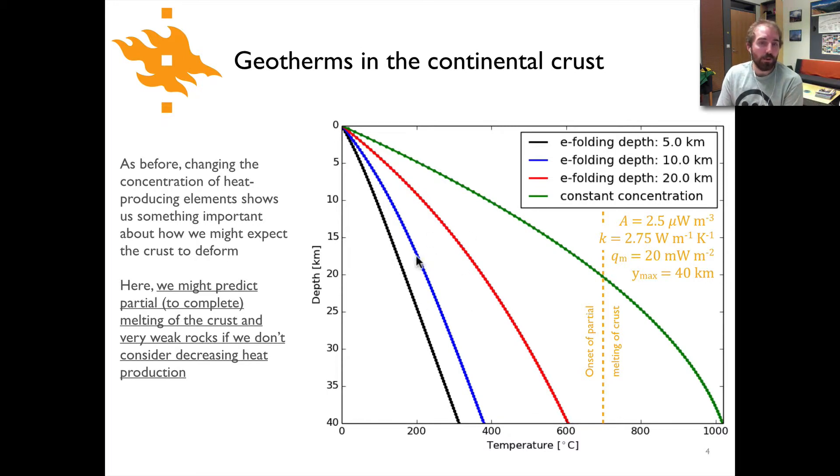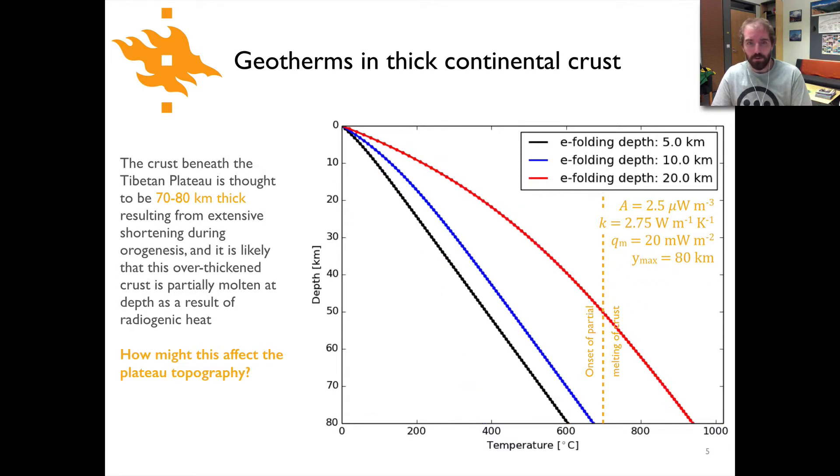In the cases where we see an exponential decrease in heat producing elements we don't see that same behavior—we stay below the temperatures at which the crust begins to melt.